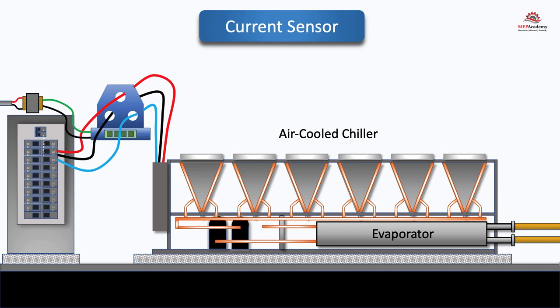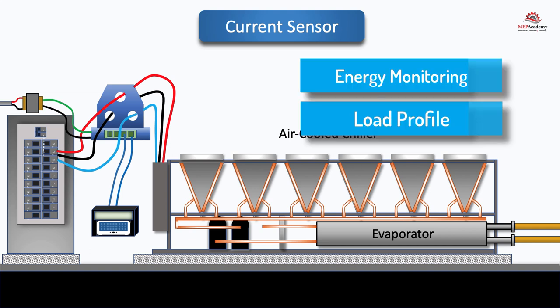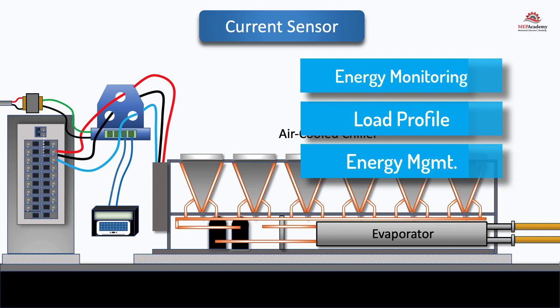This signal can be fed into a data acquisition system, energy meters, or control system for further processing and analysis. By continuously monitoring the current draw using the current sensor, the energy usage of the equipment can be calculated. The output signal from the current sensor can be processed and integrated over time to track the energy usage of the equipment. This information can be used for energy monitoring, load profiling, energy management, or billing purposes.